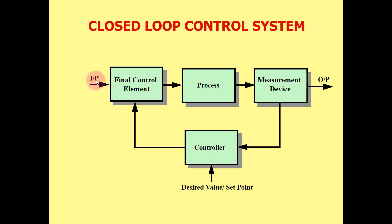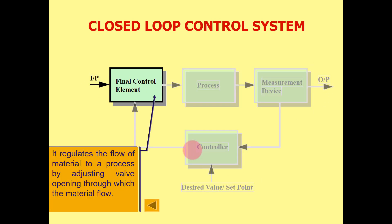This is the input of the process and this is the output of the process. The final control element regulates or controls the flow of material to a process by adjusting the valve opening through which the material flows.